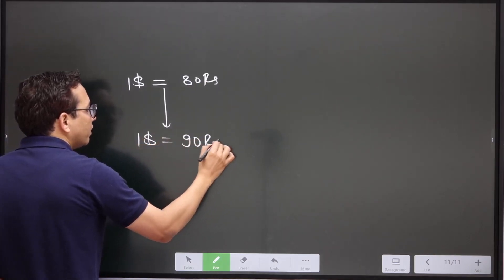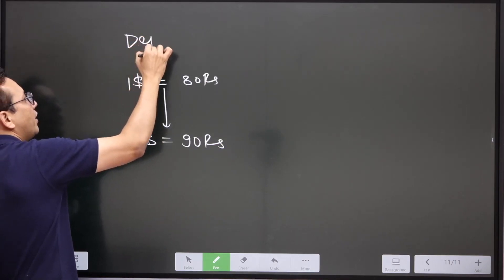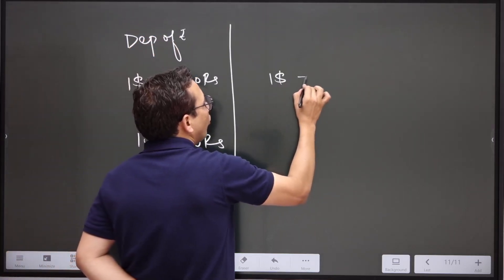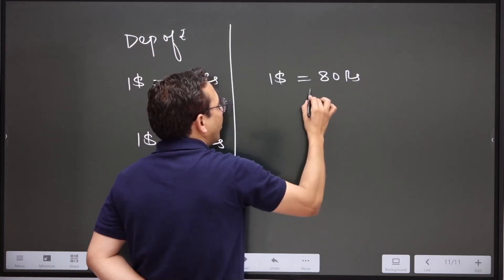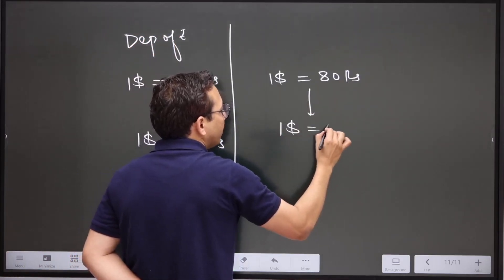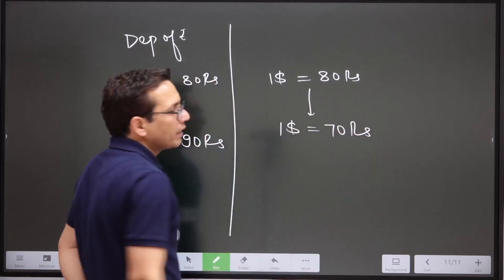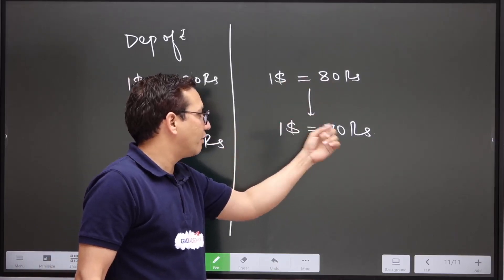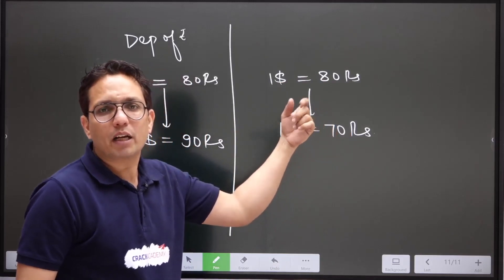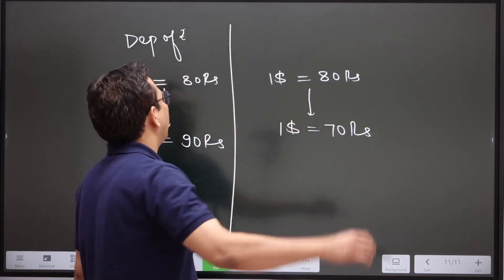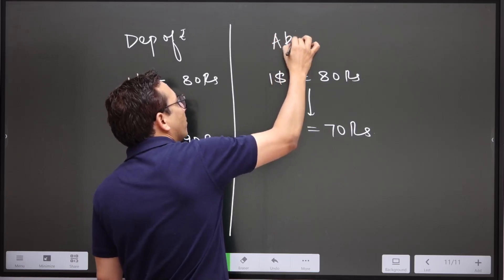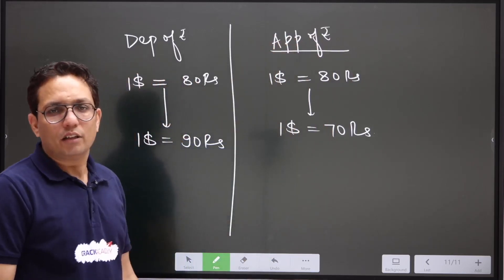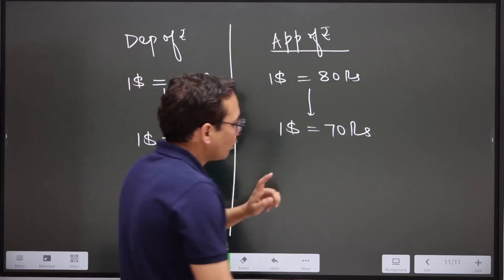So, if earlier one dollar was equal to 80 rupees and then one dollar becomes equal to 90 rupees, this is depreciation of rupee. And if one dollar was 80 rupees and now in one dollar I get only 70 rupees, can I say value of rupee has increased? Yes, because rupee has become more costly — this is appreciation of rupee.